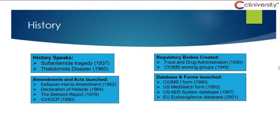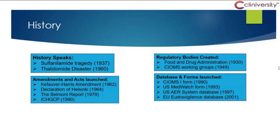Earlier, companies used to have databases. Then regulatories decided: ultimately companies are reporting all the cases to us, we are receiving them, but we don't have our own database. We are storing them in hard copy format — old-fashioned — and there are chances of fire, earthquake, losing all this data. So why can't we have a database? After long planning, because databases for regulatories need huge capacity, these two databases finally came up. The US has their own database, Europe has their own database — the two major big markets.